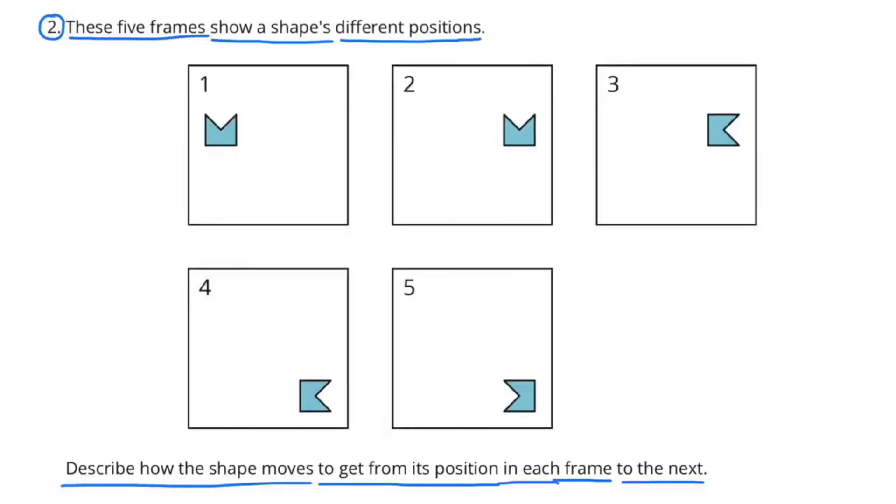Number 2. These five frames show a shape's different positions. Describe how the shape moves to get from its position in each frame to the next.